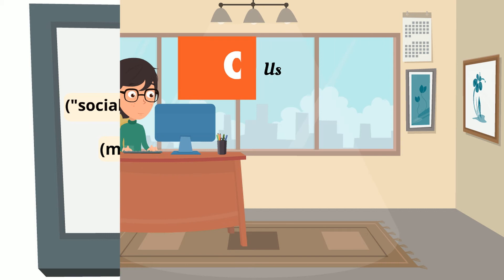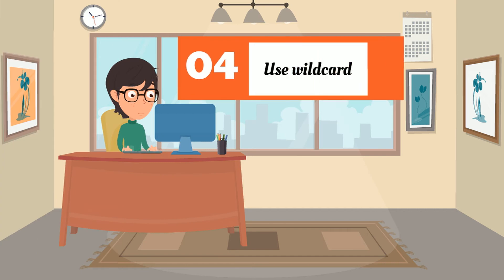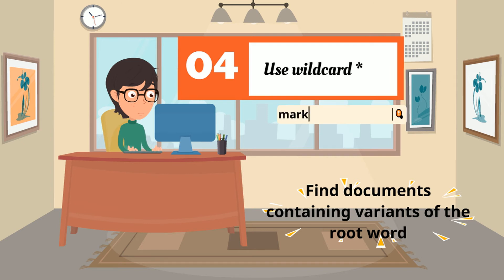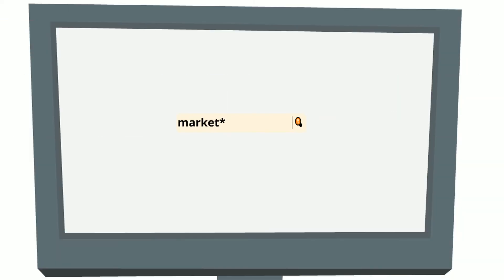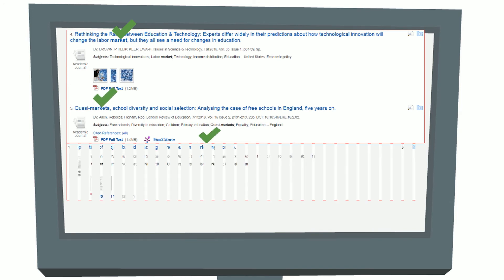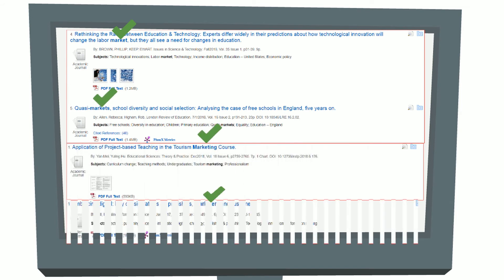Fourth, use wildcard to retrieve documents containing variations of the root word. This is done by placing an asterisk after the root word. In our example, the command will retrieve documents containing "market" and other possible word variations such as markets, marketing, and marketer.